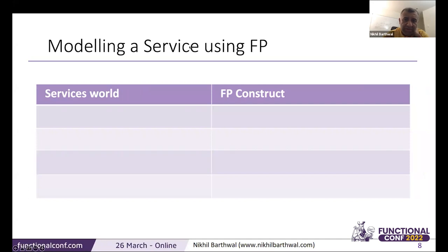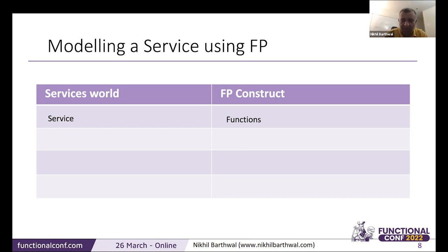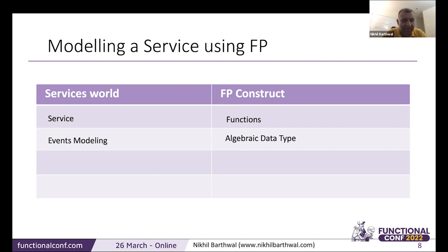How do we model services? A service in the world is basically a function in a functional programming language — there's a one-to-one mapping. Events can be thought of as triggers or inputs for services, and these events can be modeled with algebraic data types. F# has discriminated unions, Scala has case classes. Every functional language will have its own construct, but algebraic data types are a hallmark of functional programming that can model events very effectively.